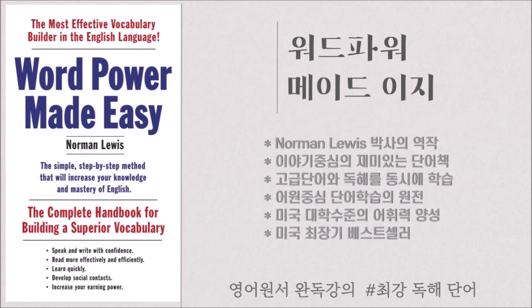Dichotomous thinking is the sort that divides everything into two parts — 이분법적 사고는 모든 사물을 두 개로 나누는 것을 말합니다. Good and bad, white and black, Democrats and Republicans — 좋은 것과 나쁜 것, 흰 것과 검은 것, 민주당과 공화당으로 나누는 것입니다. An unknown wit has made this classic statement about dichotomous thinking: 'There are two kinds of people — 이름이 알려지지 않은 어떤 현자가 이분법적인 사고에 대해서 다음과 같이 고전적인 말을 했습니다: 사람은 두 종류가 있다. Those who divide everything into two parts, and those who do not.' 모든 것을 두 개로 나누는 사람과 그렇게 하지 않는 사람이 있다.